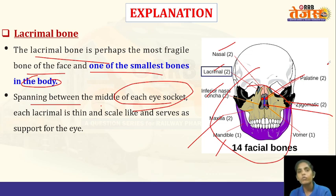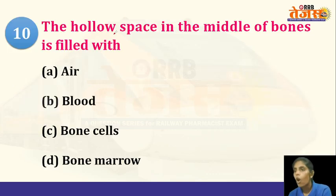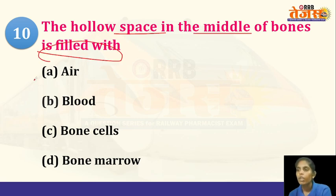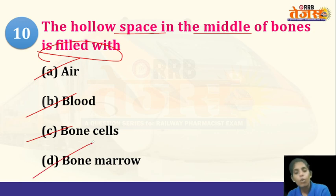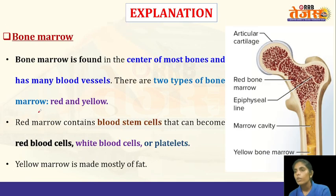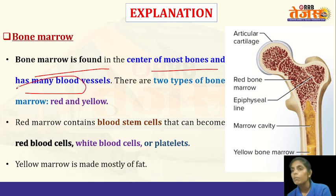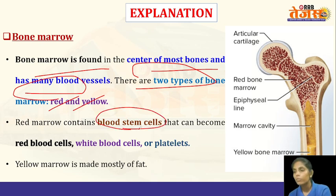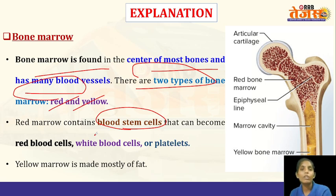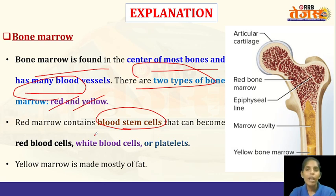Facial bones total 14. Next question: the hollow space in the middle of a bone is filled with — air, blood, bone cells, or bone marrow? The answer is bone marrow. Bone marrow is found in the center of most bones and has many blood vessels. There are two types: yellow bone marrow and red bone marrow. Red bone marrow contains blood stem cells, which produce red blood cells, platelets, and white blood cells. Yellow bone marrow is mostly fat.